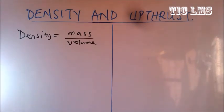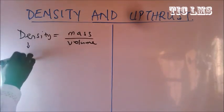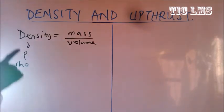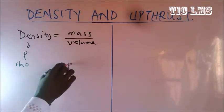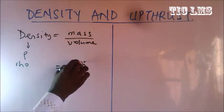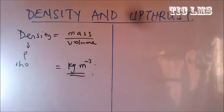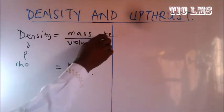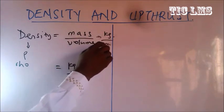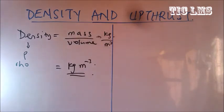Density is also referred to as rho and the unit of density is kilogram per meter cubed. This is the SI unit of density. The SI unit of mass is kilogram, the SI unit of volume is meter cubed, and when you combine them you get kilogram per meter cubed.